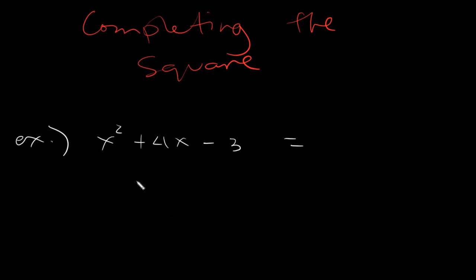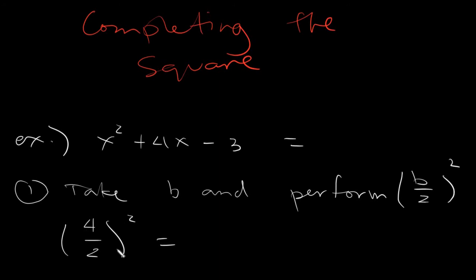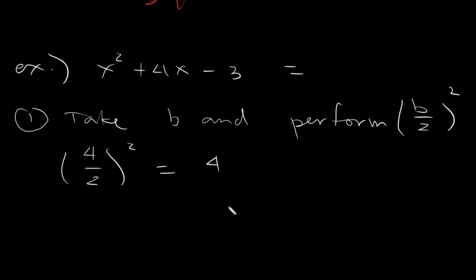The first step is to take B and perform b over 2 squared. Our B is the numerical coefficient of the middle term. So we will have 4 divided by 2 squared, which equals 2 squared, and 2 squared is 4.